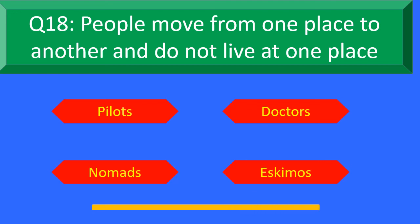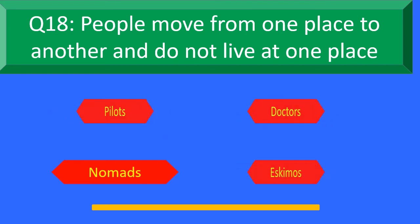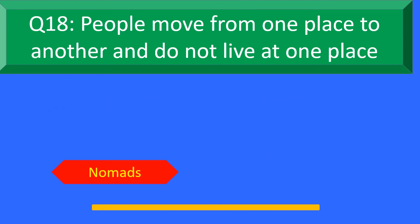And your time is up. The right answer is Option C: Nomads. People who move from one place to another and do not live at one place are called Nomads.